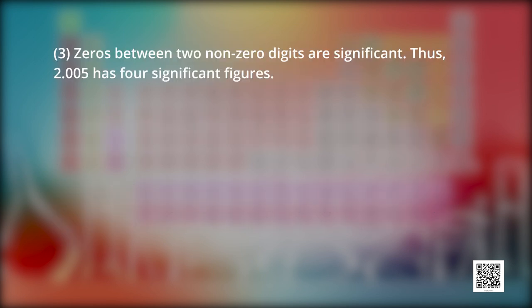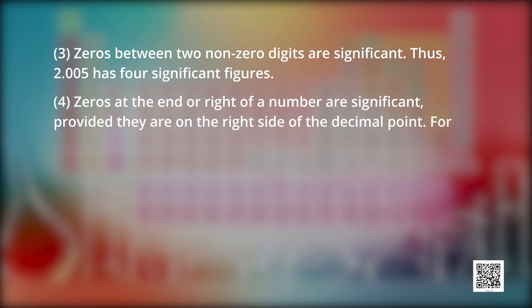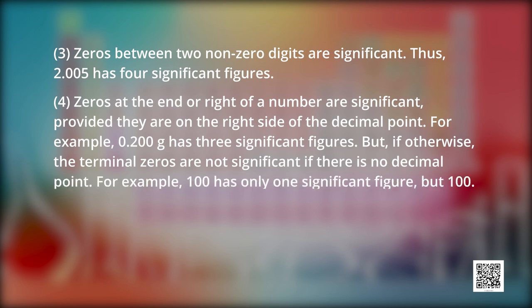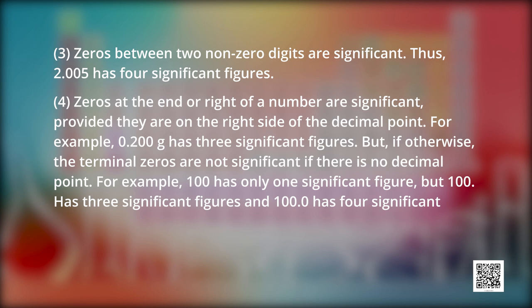The third rule is, zeros between two non-zero digits are significant. So, 2.005 has four significant figures. The fourth rule says that zeros at the end or right of a number are significant, provided they are on the right side of the decimal point. For example, 0.200 gram has three significant figures. However, the terminal zeros are not significant if there is no decimal point. For example, 100 has only one significant figure. But 100 point has three significant figures, and 100.0 has four significant figures.